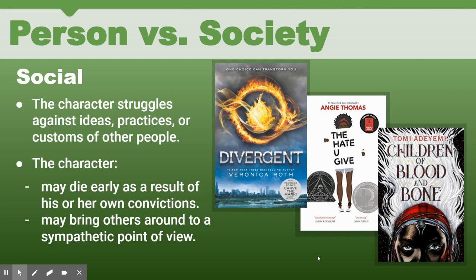In Children of Blood and Bone, the main character Zelie has the power of magic, but that's outlawed by the king. She has to hide, run, fight, and try to escape being killed — all because she has qualities that society doesn't like. In person versus society conflicts, we learn how to stand up to unjust systems and what characters are willing to sacrifice in order to make change happen.